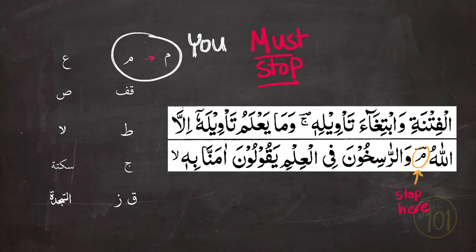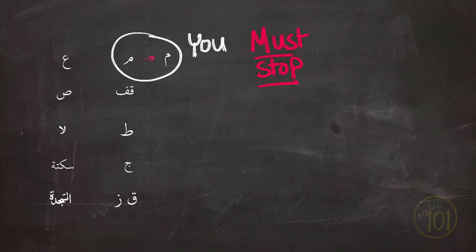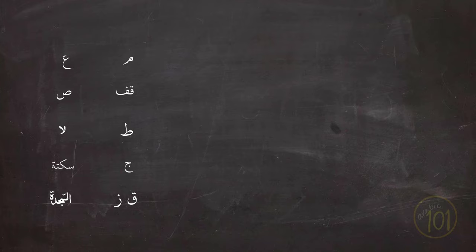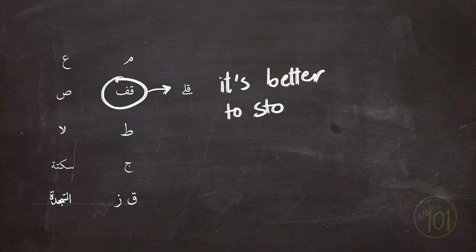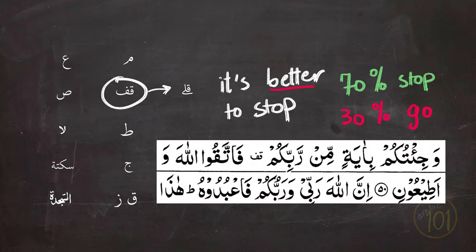So stopping after the word Allah is mandatory to keep the meaning of the ayah straight. Next is a sign that looks like the word Qif, and it is exactly what it sounds like. It is the equivalent of the sign Qil in the Uthmani Mus'haf, which means it is better to stop here. So you could keep reading but stopping there serves the meaning better. And therefore, you can compare it to 70% stop and 30% go.